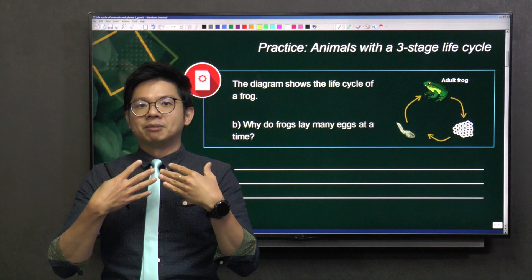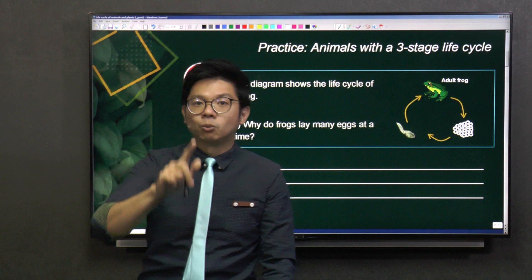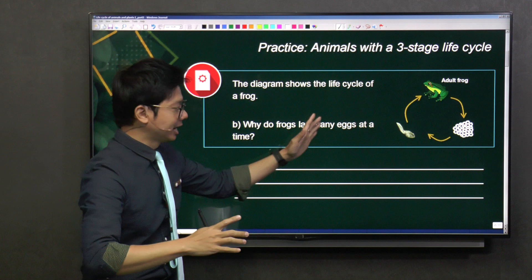For example, if you look at us - mammals, human beings - we usually only give birth to one child. I know there are twins and triplets, but most of the time it's only one child, one baby.